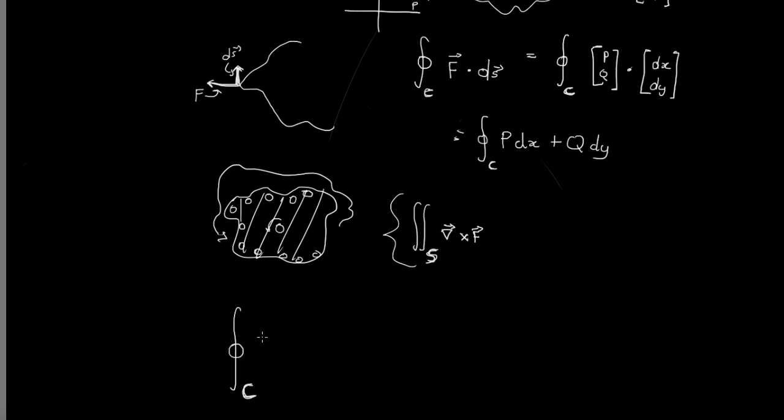So I'm just going to write it down right now. This is exactly what we've derived. P dx plus Q dy, and that is going to equal to the same thing as summing over the, sorry, integrating over the surface del cross F.